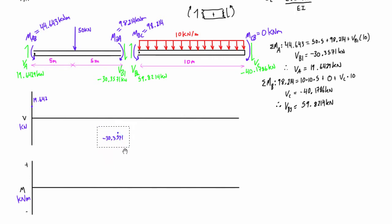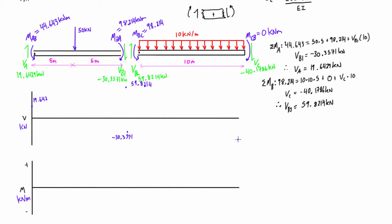The shear just to the right of point B, basically on the far left-hand side of the second span, is 59.8214 kilonewtons — that's positive, so we're up there somewhere. And then at the very other end we're getting negative 40.1786 kilonewtons.